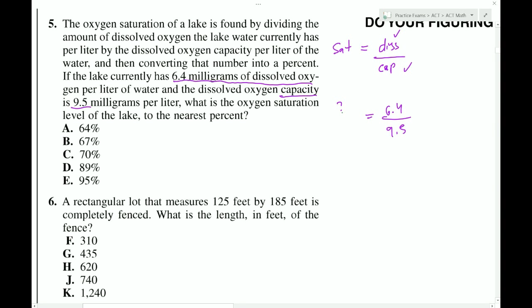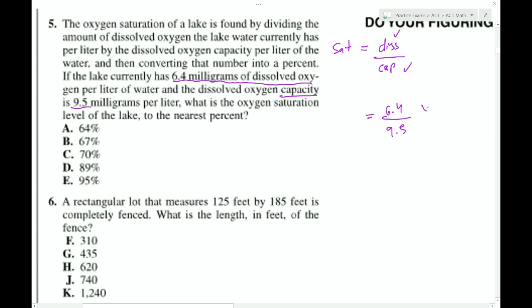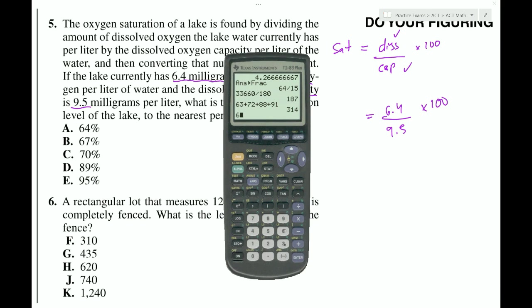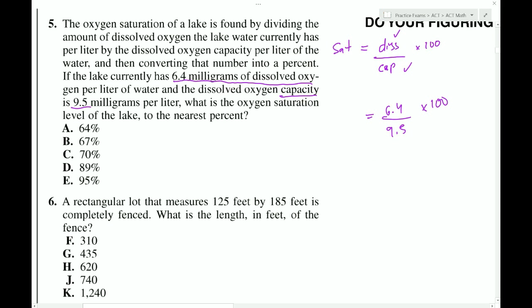So we simply, it looks like we have to divide these. And then it says convert that number into a percent. So we'll get a decimal when we do this. And to convert a decimal to a percent, you just have to multiply by 100. So that should be part of our formula as well. So grab the calculator. Do 6.4 divided by 9.5. And we get .67. And then, of course, we multiply that by 100, and that'll give us 67%. Choice B.